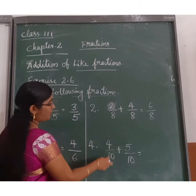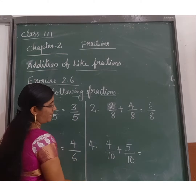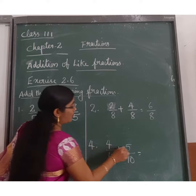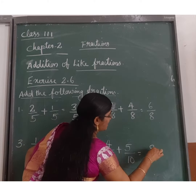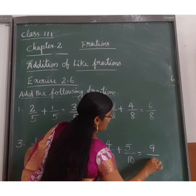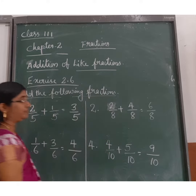4 by 10 plus 5 by 10: the numerators are 4 plus 5 is 9, with the same denominator, giving 9 by 10.